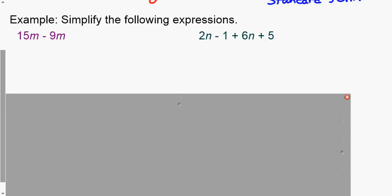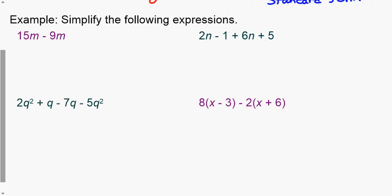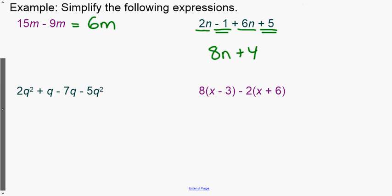Try each of the four practice problems. For 15m minus 9m: they're like terms, so the answer is 6m. For the n problem, identify the like terms: underline the variable terms — 2n plus 6n is 8n — and underline the constants twice: negative 1 plus 5 is 4, giving 8n plus 4.